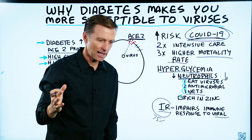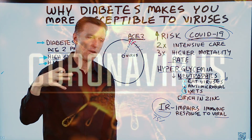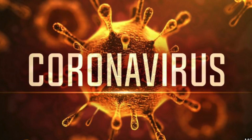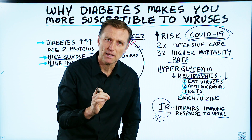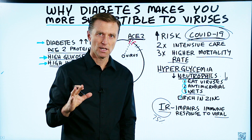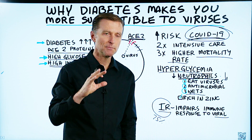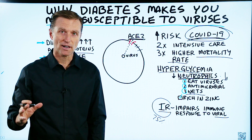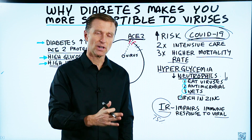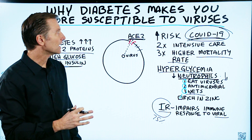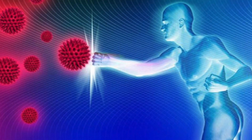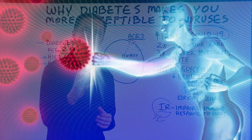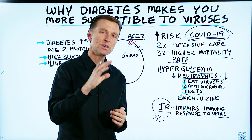If you're a diabetic and you're concerned about COVID-19 but you continue to eat foods that are high in carbohydrates, then you are missing a key piece to this entire puzzle. With some slight modifications of your diet — cutting out those carbs and decreasing the frequency of your meals — you can greatly improve diabetes and also improve your immune system. If you're a diabetic, you need to know what to eat to minimize the risk factors.